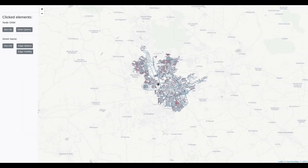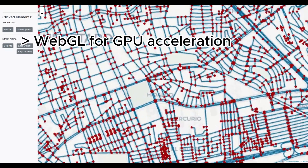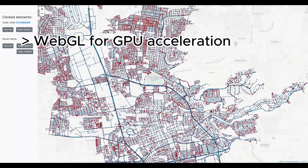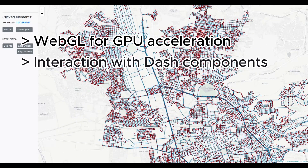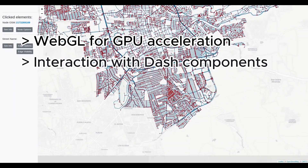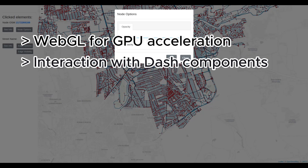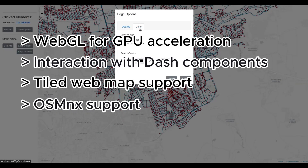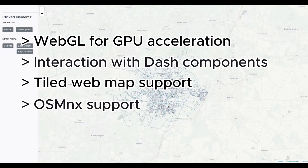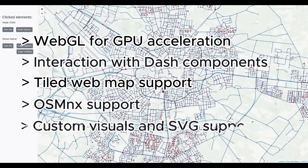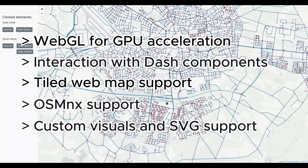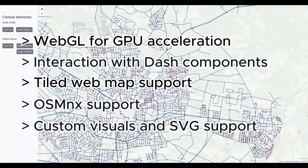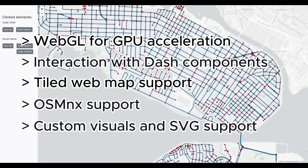DashSilverEye boasts several key features. It uses WebGL for GPU-accelerated rendering, allowing for smooth navigation on large road networks. It's fully integrated with PlotlyDash, meaning road network data and visual properties can be dynamically updated by reacting to other Dash components. It supports any map tiles supported by leaflet.js, and can load road networks from NetworkX graphs produced by OSMNX. It also allows for customization of visibility, transparency, color, and size of individual nodes, edges, and markers, and supports customizable markers via custom SVG files.